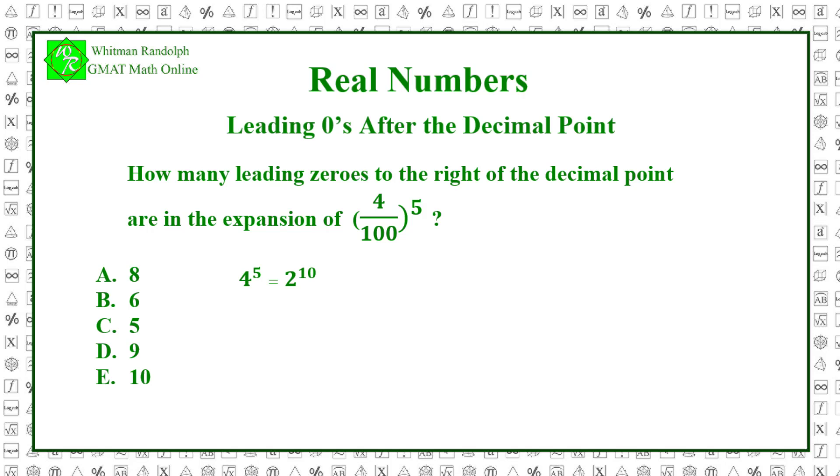4 to the fifth equals 2 to the tenth, and 100 to the fifth equals 10 to the tenth. So (4/100) to the fifth equals 2 to the tenth over 10 to the tenth. Now 1 / 10 to the tenth equals 10 to the minus tenth, which equals .00000001. We've put spaces between every three zeros to make them easier to count. As you can see, there are 9 leading zeros, which is the exponent of 10 minus the number of digits in the numerator of 1 / 10 to the tenth. There is just one digit in this numerator, so the number of leading zeros is 10 minus 1, which equals 9.